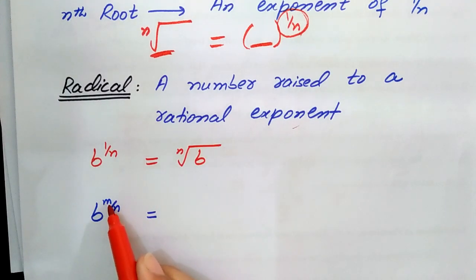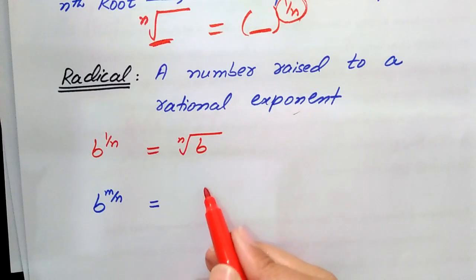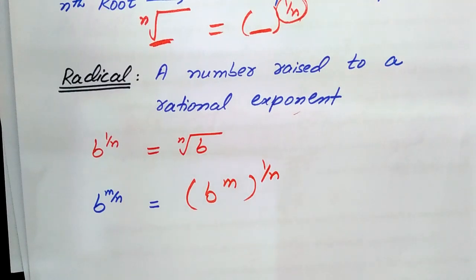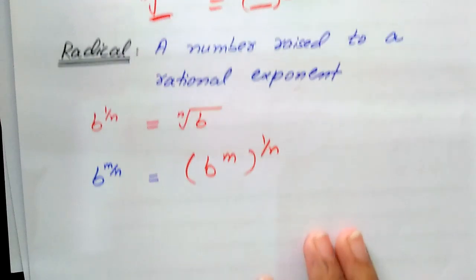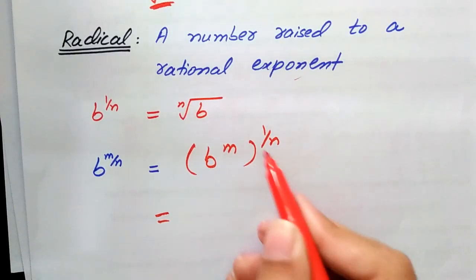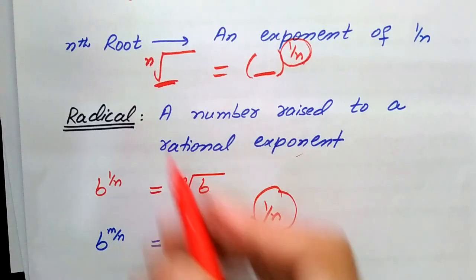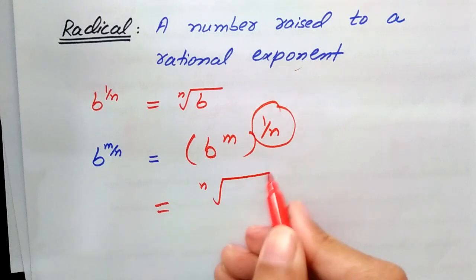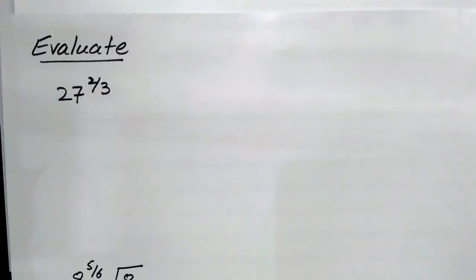If you have b raised to power m/n, we can separate the exponent as m times 1/n using the law of exponents in reverse. Then 1/n becomes the nth root, so it becomes the nth root of b raised to power m.